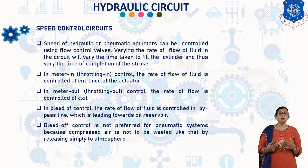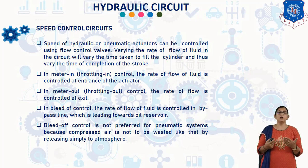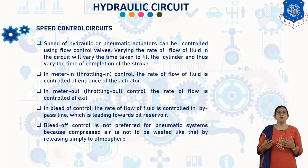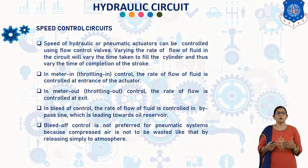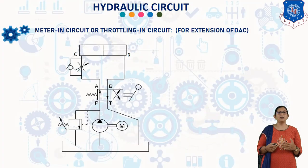In the meter-in circuit, also known as the throttle-in circuit, the rate of flow of fluid is controlled at the entrance of the actuator. In the meter-out circuit, the rate of flow is controlled at the exit. In bleed-off control, the rate of flow of fluid is controlled in a bypass line leading toward the oil reservoir. Bleed-off control is not preferred for pneumatic systems because compressed air cannot be recirculated like hydraulic fluid.